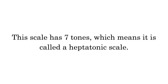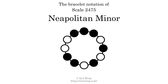This scale has 7 tones, which means it is called a heptatonic scale. This is a bracelet notation diagram of scale 2475. The shaded circles represent tones that appear in the scale, and they are read clockwise, starting at the top.